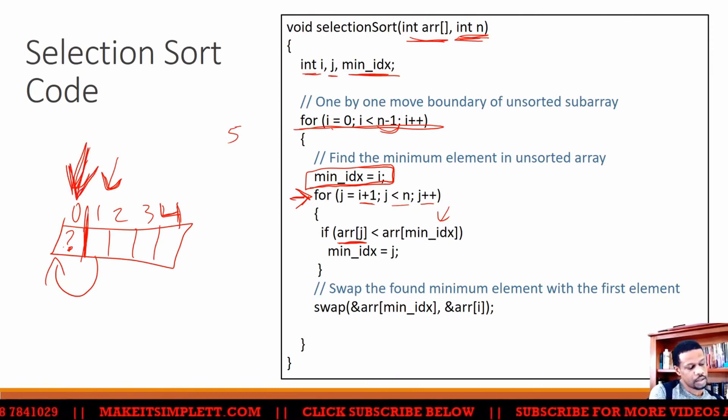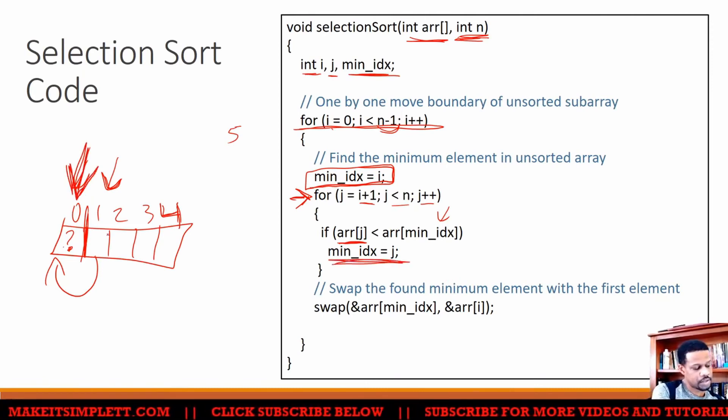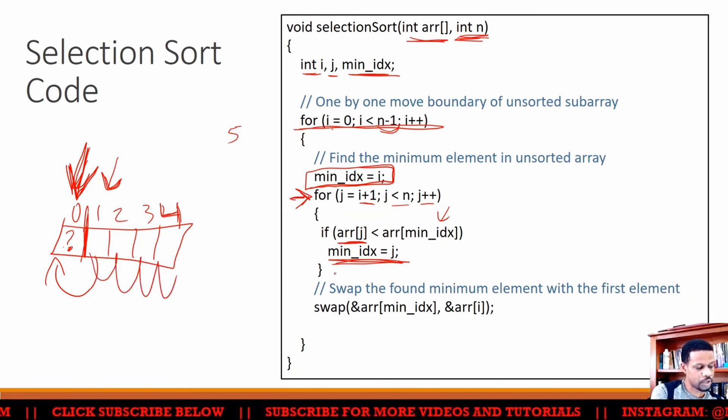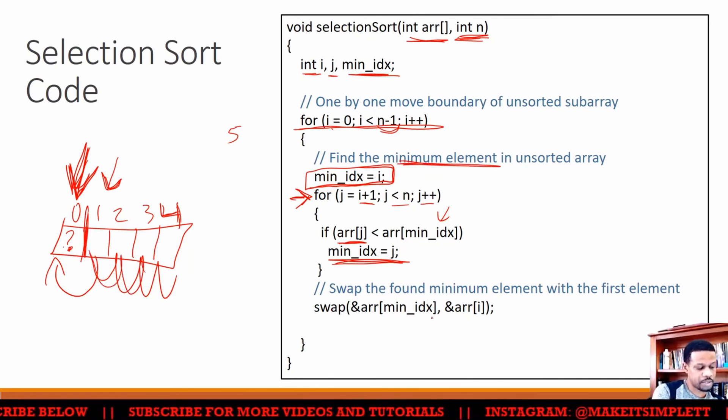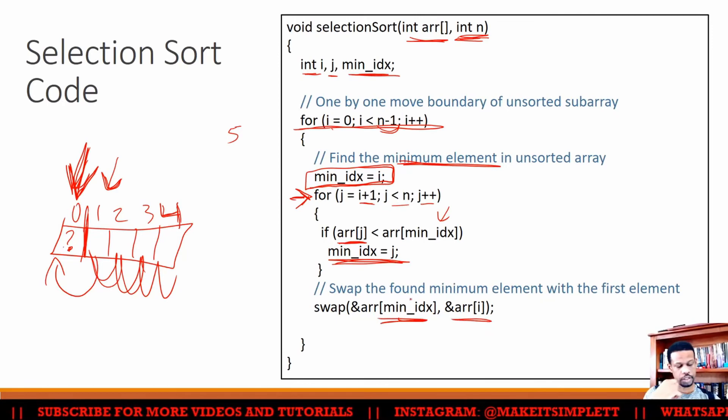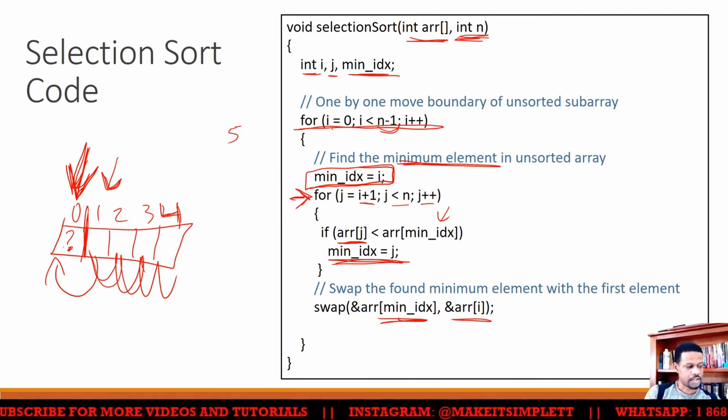If it is, then set the minimum index to j. That means I'm going to keep track of where the smallest value is from all of these here. So the whole point of this loop is to keep going up and find the minimum element. Once I find the minimum element, I'll swap the two of them. That's what happens in Selection Sort.